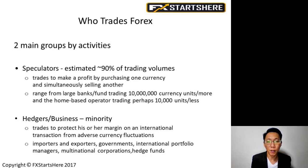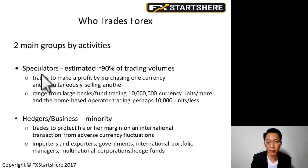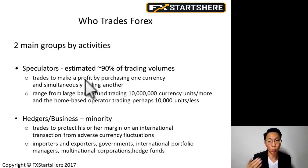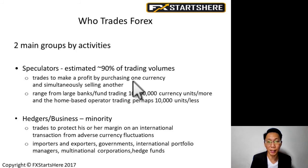Forex is traded by two main groups of people. The first are the speculators, and the second group are the businesses or corporations. Speculators make up an estimated 90 percent of the trading volume every day. These are retail traders like you and I — we are known as the speculators. We trade to make a profit by purchasing one currency and simultaneously selling another.